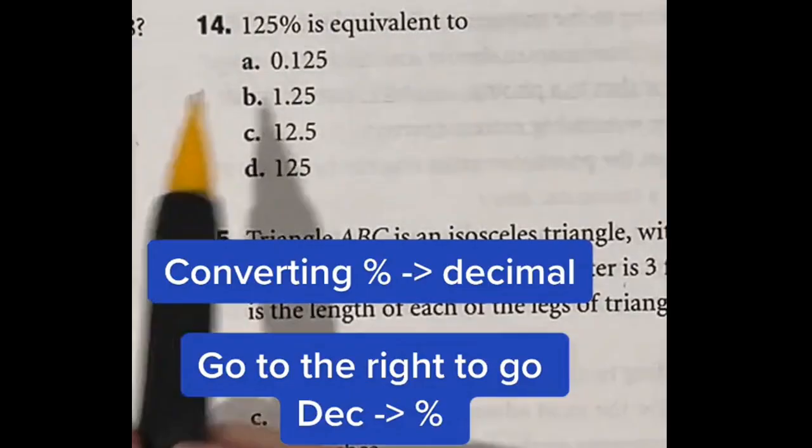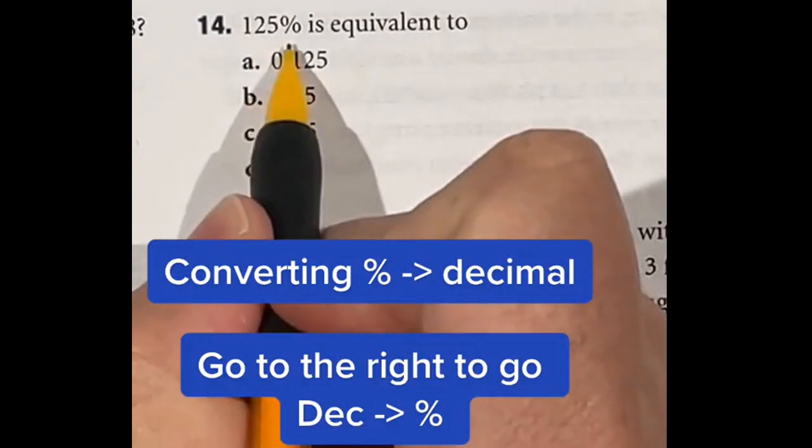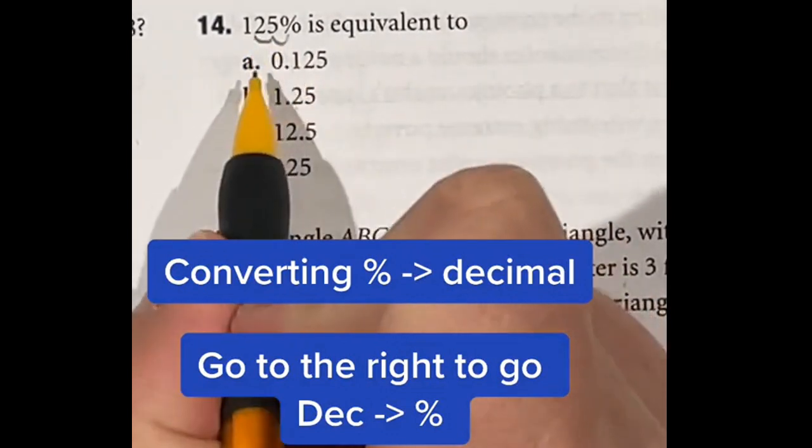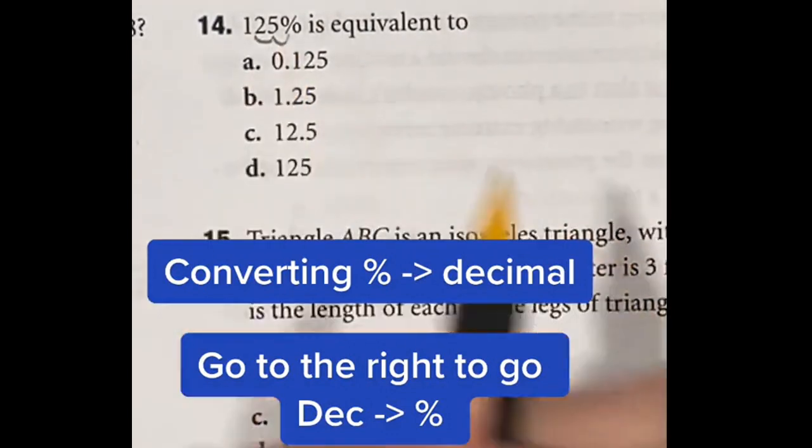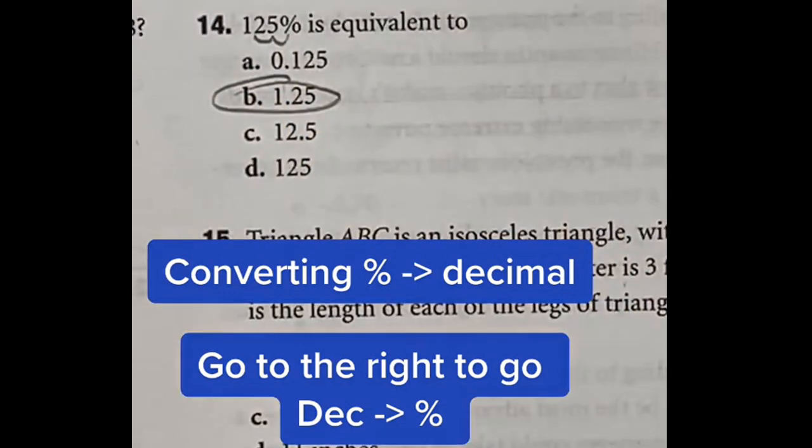Whenever you're switching a percent to a decimal you always move the decimal place over to the left twice. So in this case moving it over twice would put us at 1.25 which is answer B.